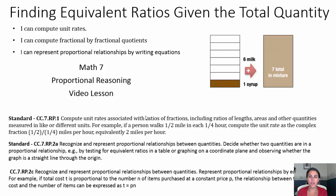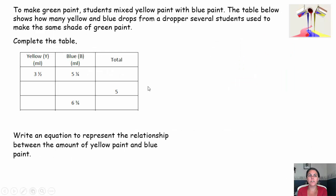Tonight's lesson is finding equivalent ratios given the total quantity. We're going to continue to work on computing unit rates, dividing fractions by fractions, multiplying fractions by fractions, and writing equations for proportional relationships.